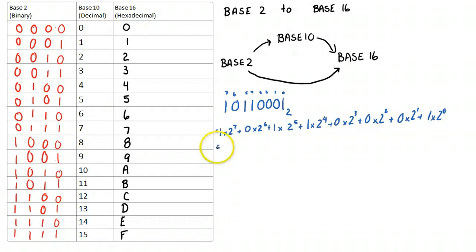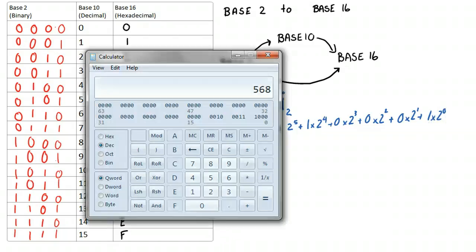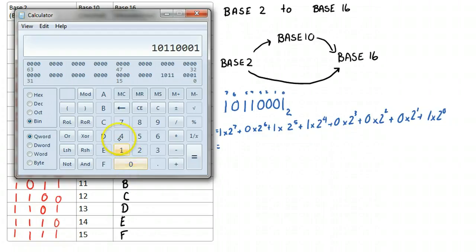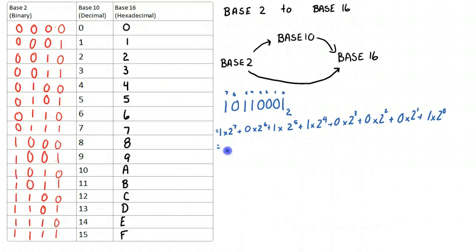And then I can get my calculator and work that out. Luckily, I have a programming calculator here, so I'm going to jump into binary mode. I'm going to clear this, and I'm going to say 1, 0, 1, 1, 0, 0, 0, 1. And then I'm going to convert that to decimal. So we get 177.